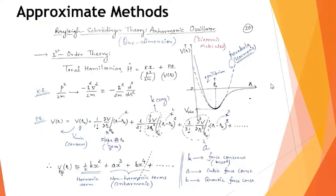In spectroscopy—atomic and molecular spectra—including electronic, vibrational, and rotational spectra, the real potential energy curve for atoms and molecules has a characteristic shape. The continuous black line in the graph shows the typical potential energy as a function of separation r between two atoms or molecules in a diatomic system.